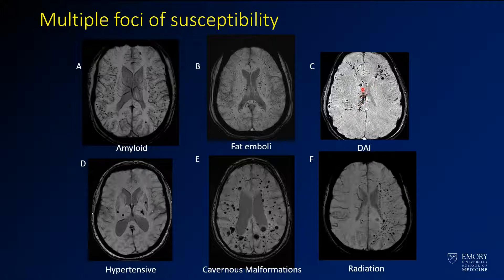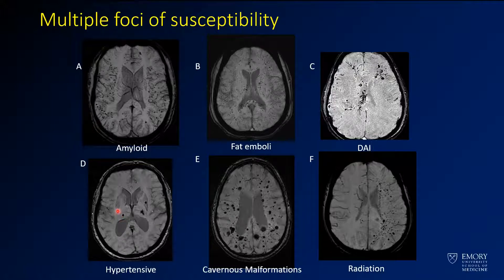For diffuse axonal injury, you see some involvement along the body of the corpus callosum, with a frontal and subcortical distribution. This next example shows the classic distribution of hypertensive hemorrhages: involvement of the caudate/putamen, the basal ganglia, and bilateral thalami — very classic for hypertensive hemorrhage.